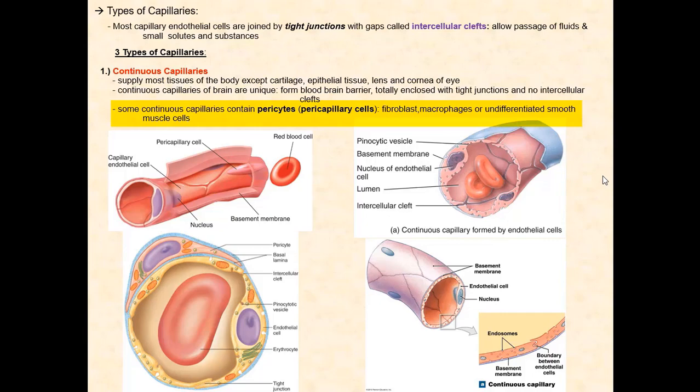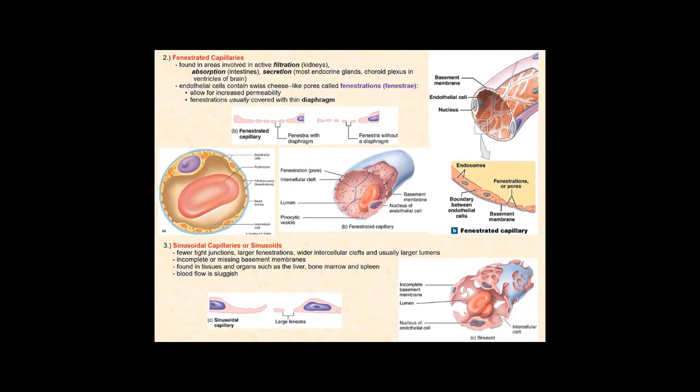In addition to the continuous capillaries, there are two other types: the fenestrated capillaries and the sinusoidal capillaries. These capillaries are found in specific tissues and organs and are not as numerous as the continuous capillaries. Fenestrated capillaries are found in tissues and organs involved in filtration, such as the kidneys, absorption, such as the intestines, and secretion, such as the endocrine glands.